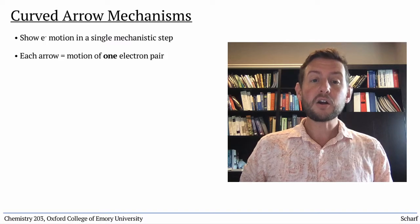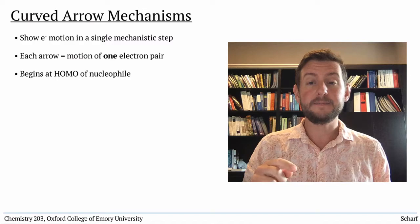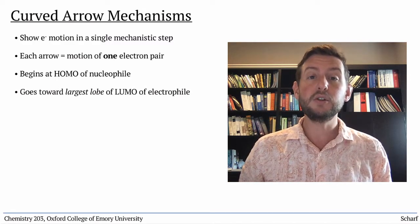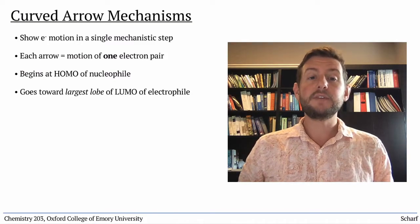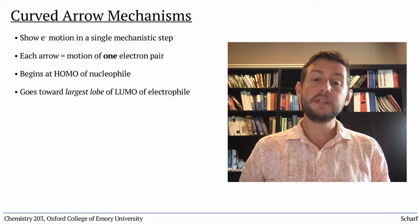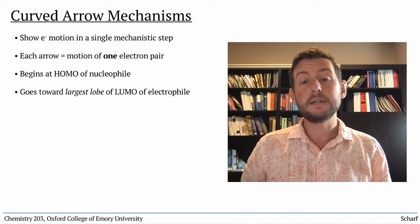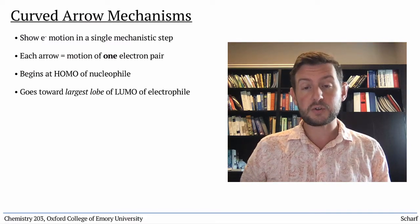A curved arrow almost always begins at the HOMO of the nucleophile and goes toward the largest lobe of the LUMO of the electrophile. Depending on the nature of the interacting HOMO and LUMO, this orbital interaction may force other electrons to move as well. These are also illustrated with additional curved arrows drawn on the same chemical structures.